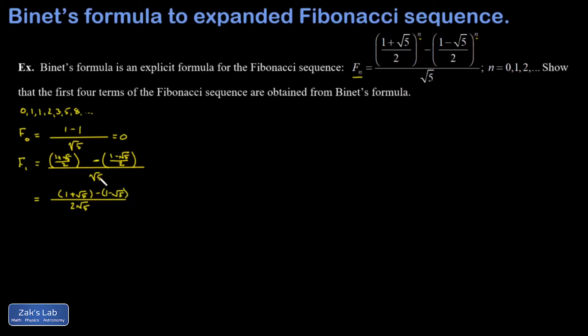distribute the negative 1, and we're going to cancel those ones, and then I get root 5 minus negative root 5, in other words, root 5 plus root 5, and I end up with 1. So that one worked out.